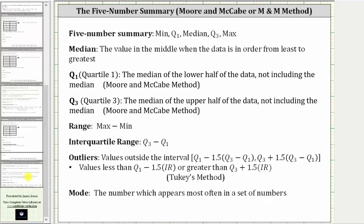In this video, we will be using the Moore and McCabe method to determine the quartiles, where quartile one is the median of the lower half of the data, not including the median, and quartile three is the median of the upper half of the data, again not including the median.